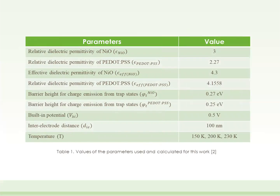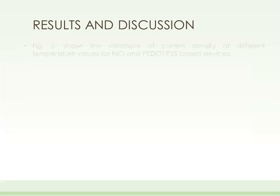The values of the parameters used in this work are given in Table 1. The relative dielectric permittivity of NiO and PEDOT:PSS is given as 3 and 2.27 respectively. Effective dielectric permittivity for NiO and PEDOT:PSS is calculated as 4.3 and 4.1558 respectively. Barrier height for NiO and PEDOT:PSS is given as 0.27 and 0.25 eV respectively. Built-in potential is 0.5 V, inter-electrode distance is 100 nm, and temperatures considered are 150 K, 200 K, and 230 K.